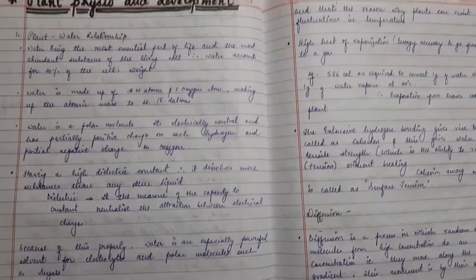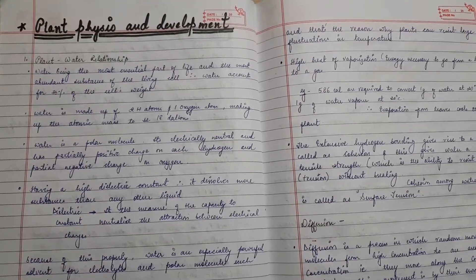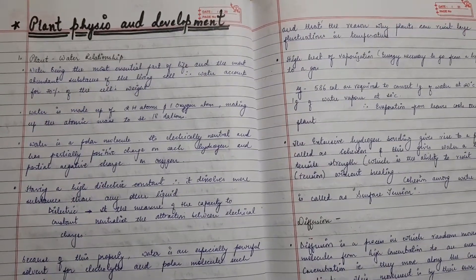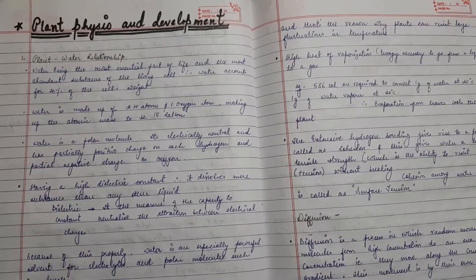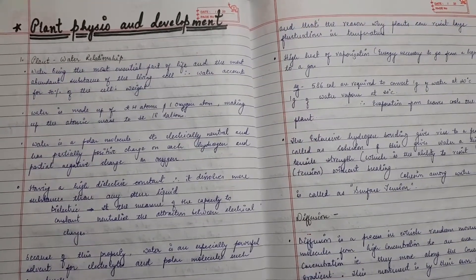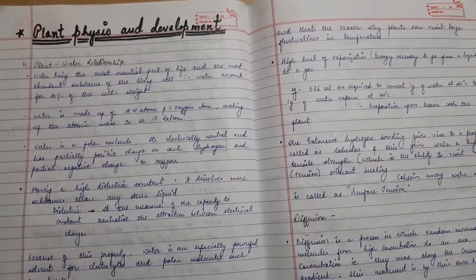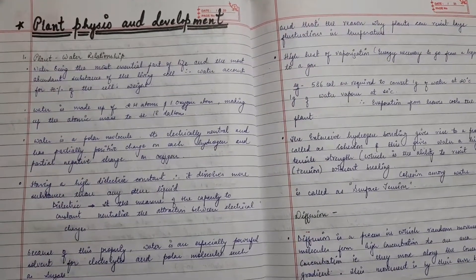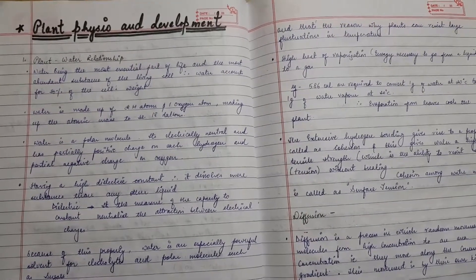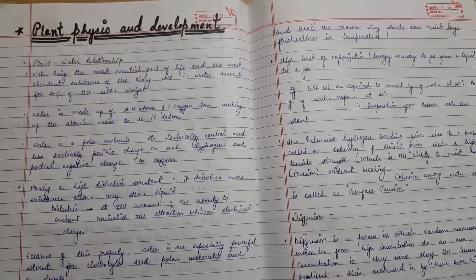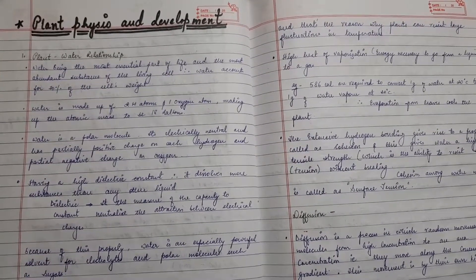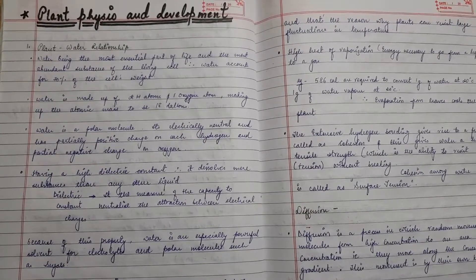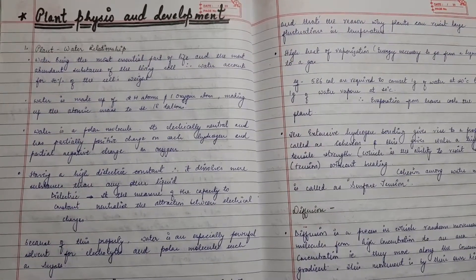Water accounts for about 70 percent of the cell's weight — it is the most essential part of life and the most abundant substance in the living cell. Water is a polar molecule because of greater electronegativity and less electropositivity. It has two hydrogen atoms and one oxygen atom, making the atomic mass 18 Daltons. It is electrically neutral but has partially positive charges on each hydrogen atom and a partial negative charge on oxygen.